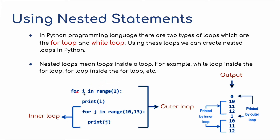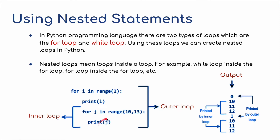Here I've got `for i in range(2)` — so do this twice — print whatever's in i. But within that we've got `for j in range(10, 13)`, print j inside the inner loop. So we've got the outer loop and then we've got the inner loop.